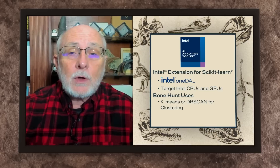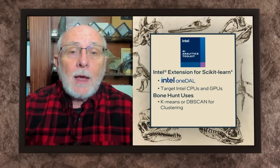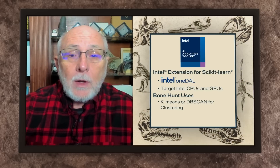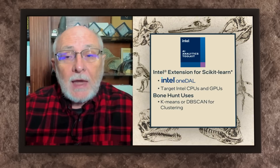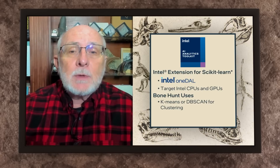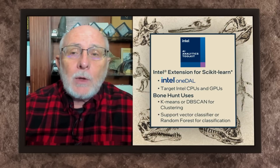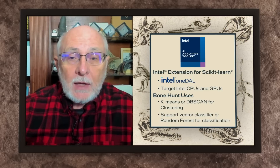You can target both Intel CPUs and GPUs with many of these algorithms. We use Intel extensions for scikit-learn accelerations in our Bonehunt. We use k-means or DBSCAN to perform clustering, and I explain in a previous episode why context matters for dinosaur bones and how clustering is an important function. We also use Intel extensions for scikit-learn for classification on our tabular data, specifically support vector classifier or random forest, and we can use them to perform classification for our labels.